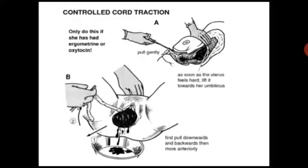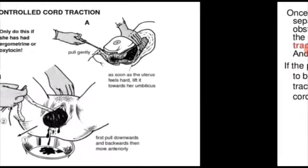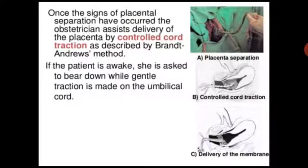First, controlled cord traction. Only do this if she has had ergometrine or oxytocin. Pull the umbilical cord gently and massage the fundus as soon as the uterus feels hard. Pull downward and backward, then more anteriorly. Once the signs of placenta separation have occurred, the obstetrician assists delivery of the placenta by controlled cord traction as described by the Brandt-Andrews method.